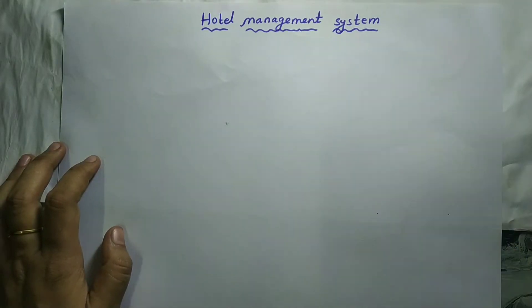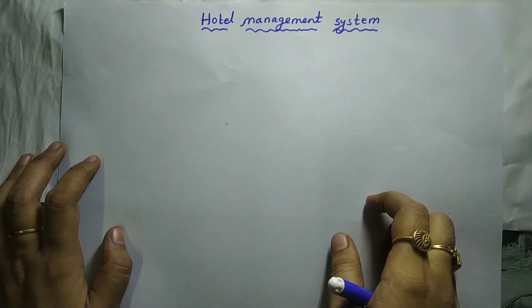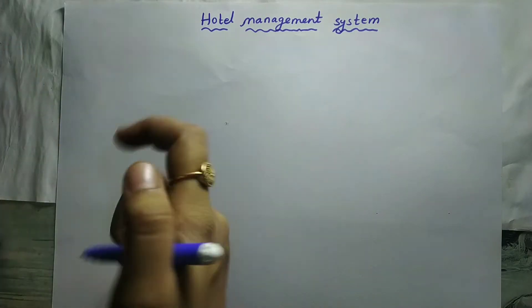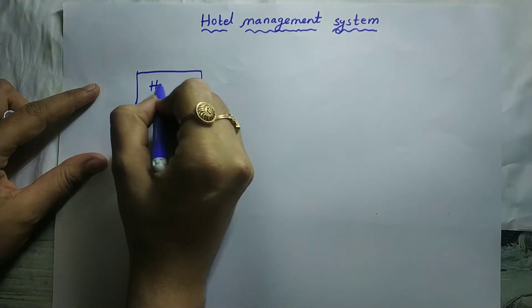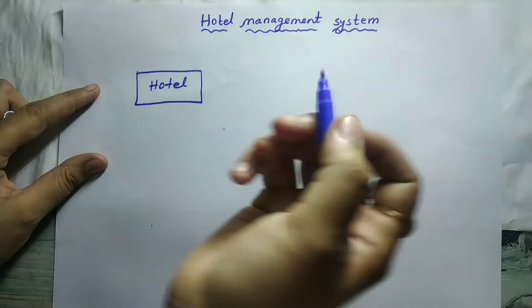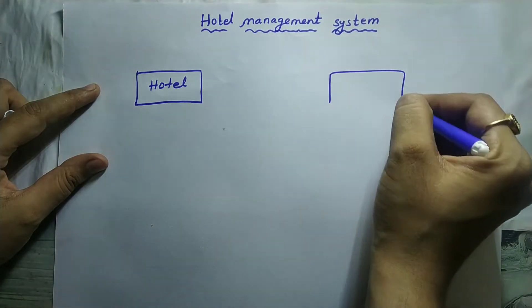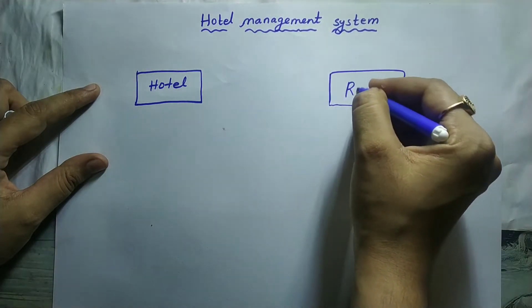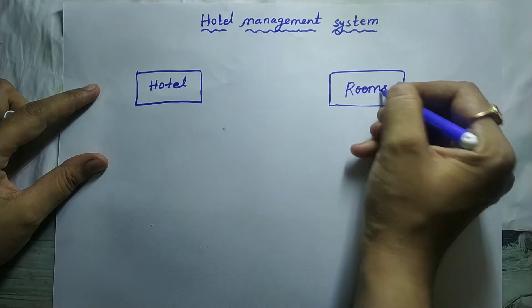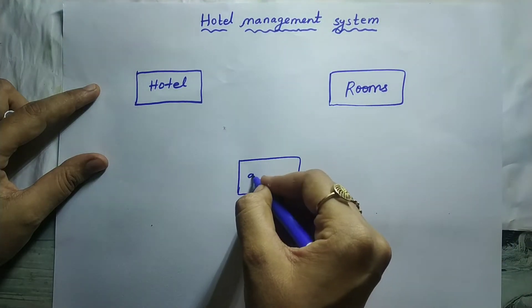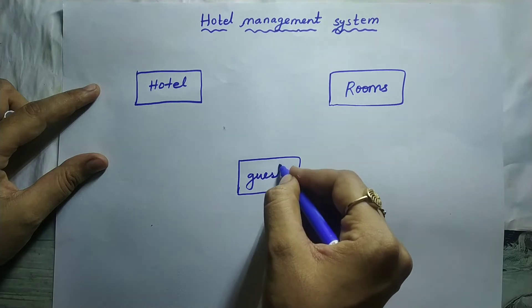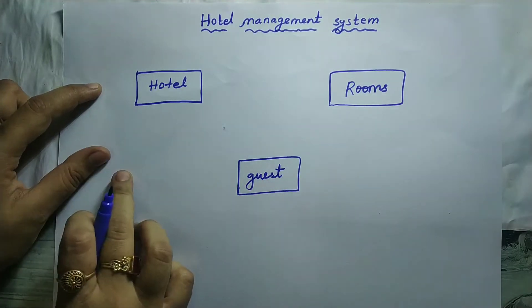Entity must be written inside a rectangular box. So draw the rectangular box, write the first entity name which is hotel. Next rectangular box, write the next entity name which is rooms. Next rectangular box, and write the third entity name which is guest. So three entities are hotel, room, and guest.